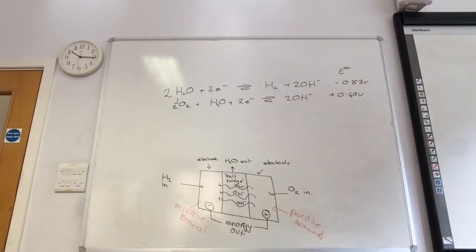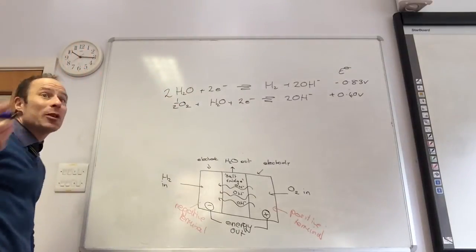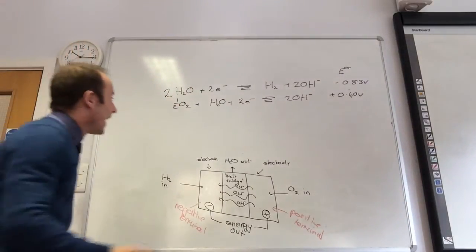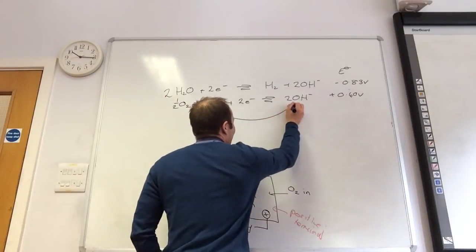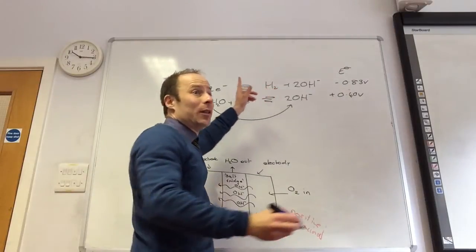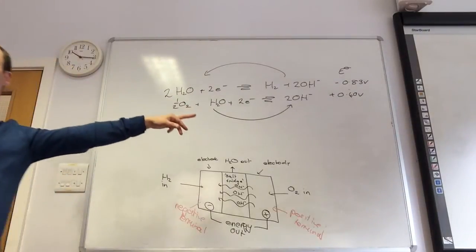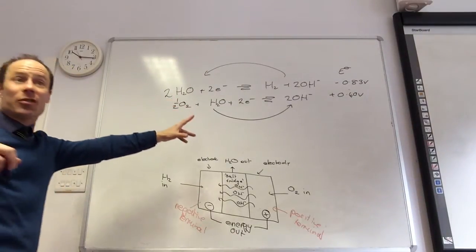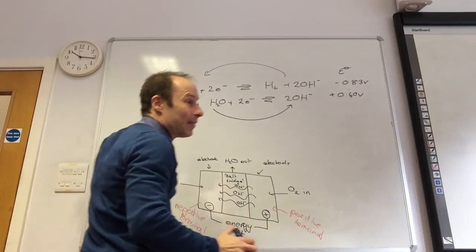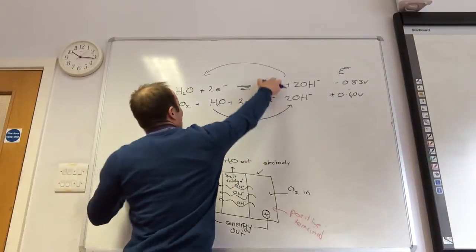We always show it as reduction. Which one is the most positive? That one goes from left to right. So what's going to happen to the other one? That one has got to be reversed. I've got the same number of electrons on both equations, so I can add these together to give my overall reaction. Yes, I've reversed the first equation.